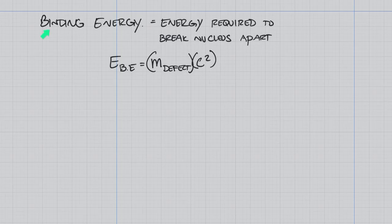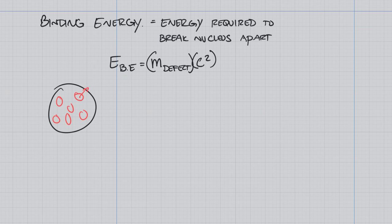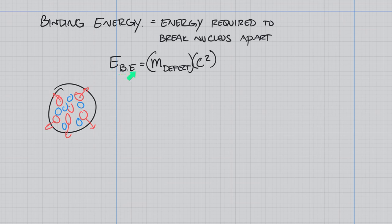We need to know that mass difference because it helps us understand binding energy. The nucleus is made up of protons which want to repel each other, while neutrons act as glue holding the nucleus together. That energy is found in the difference between the masses of the individual pieces and the nucleus itself. The energy required to hold the nucleus together — or break it apart — is given by E equals mc squared, where m is the mass defect.